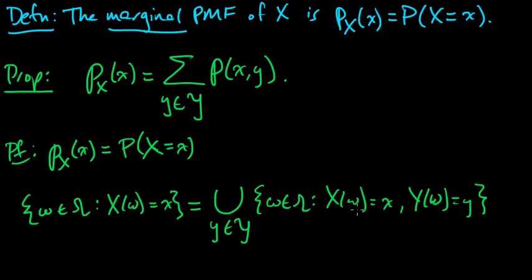Because this is a disjoint union. First to see it's a union, you can show that for any omega here, it satisfies this, and therefore it belongs to one of these sets, because Y(ω) must take some value, little y. And the opposite also holds, and it's a disjoint union because each y is different in these different sets.